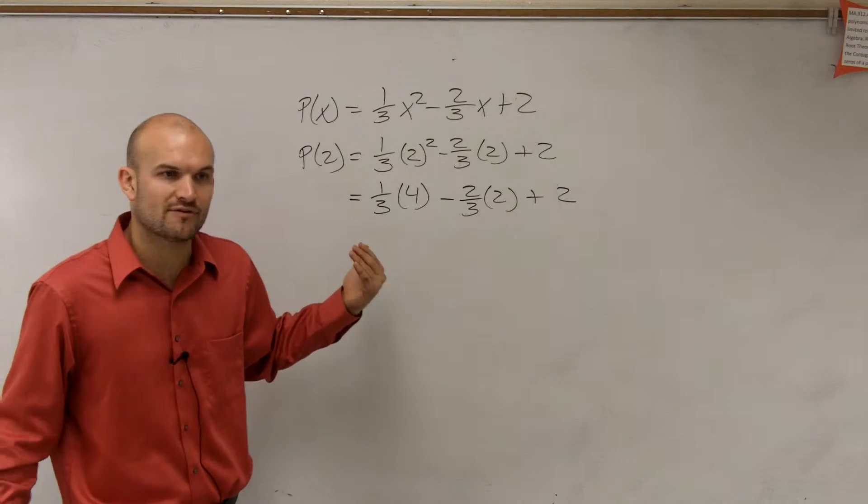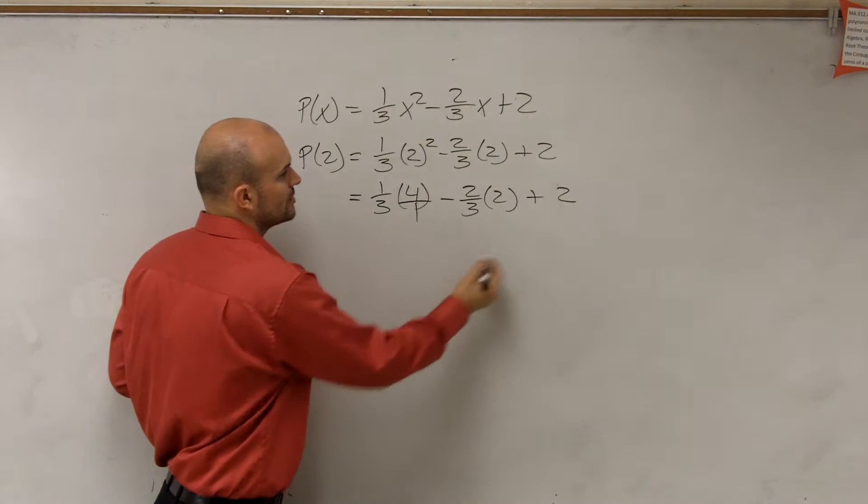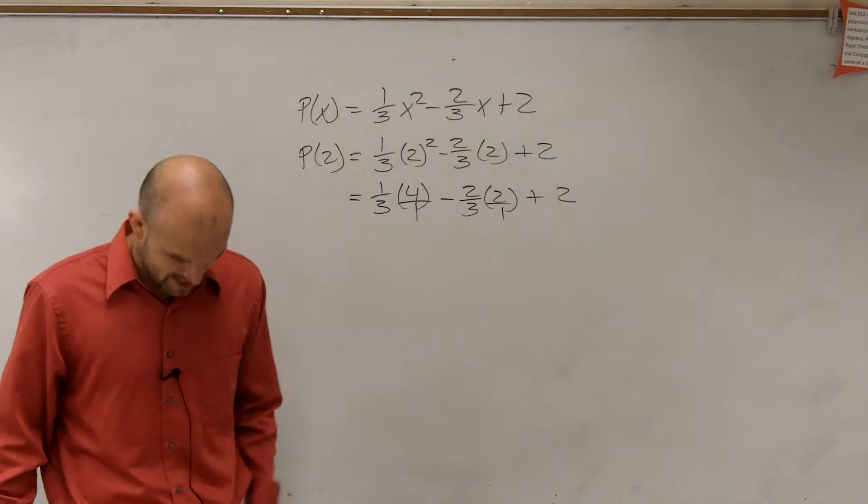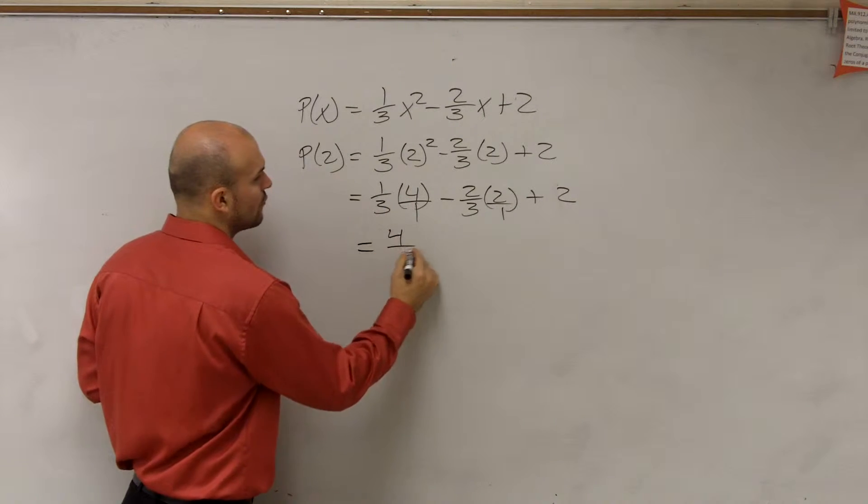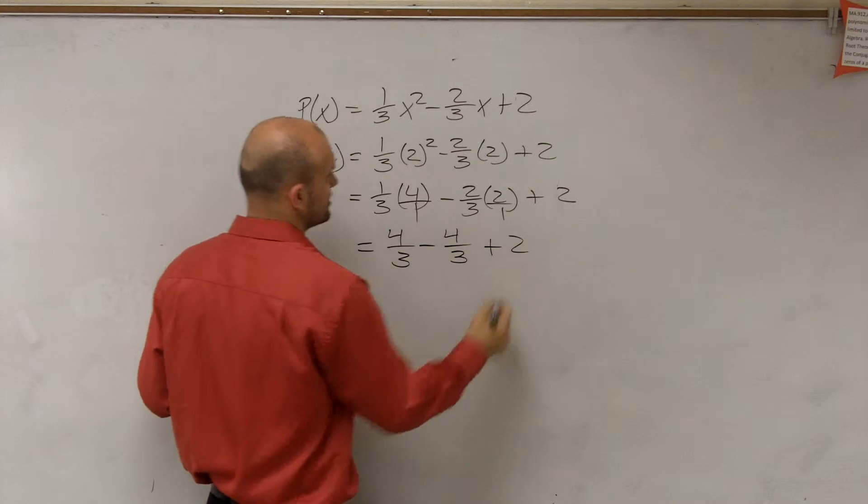Now we multiply. When multiplying fractions, when you have a fraction times a whole number, convert your whole number to fractions by putting them over 1. So now when we multiply, we're just going to multiply across. So therefore, this is going to equal 4/3 minus 4/3 plus 2.